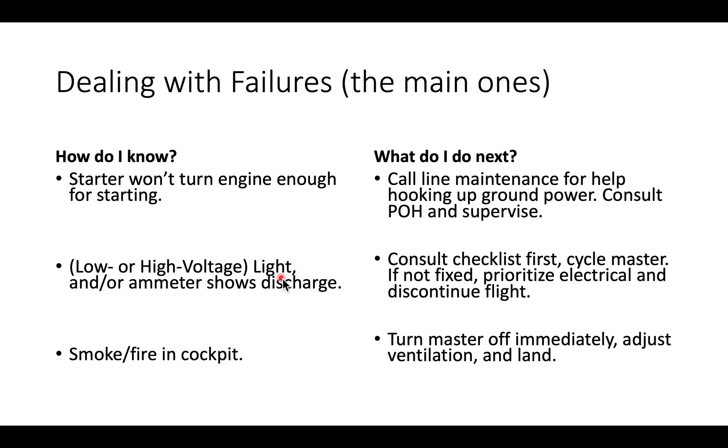If the system has tripped because of a voltage spike or a fault inside the alternator, you're going to get a high or low voltage light illuminate. And above all, you're going to find an ammeter that's showing a discharge instead of its normal charge. You should consult your checklist before you do anything on this because this is not a time-critical thing. You have a minute or two to figure things out. So, consult your checklist. Probably what it's going to have you do is cycle the master. And that means simply turning the master off and then back on again. That solves the problem probably eight out of ten times.